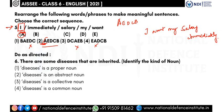The sixth question: 'There are some diseases that are inherited.' We are supposed to identify the kind of noun for the word 'diseases.' Options: diseases is a proper noun, diseases is an abstract noun, diseases is a collective noun, diseases is a common noun.